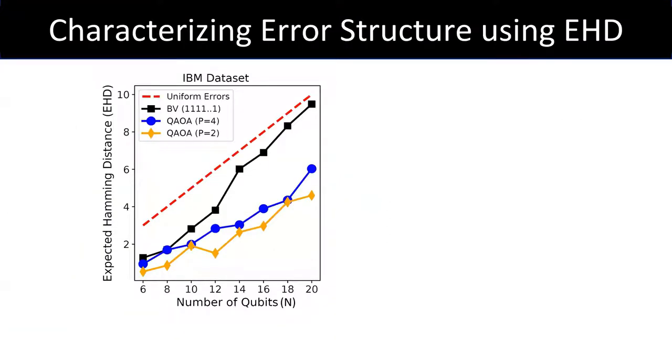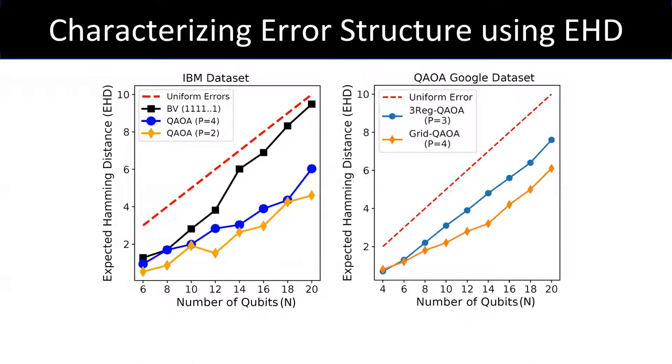If errors are uniformly distributed, we would see EHD close to the dotted red line. Our characterization results for Bernstein-Vazarani and QAOA workloads indicate that there indeed is a structure in errors as the EHD is lower than N over 2 or the dotted line. We observe this structure on both IBM and Google quantum computers. For benchmarks like QAOA, EHD is low even for large quantum circuits that use more than 15 qubits. This indicates that structure in error may persist for near-term applications like QAOA that rely on shallow quantum circuits.